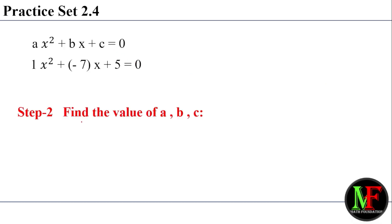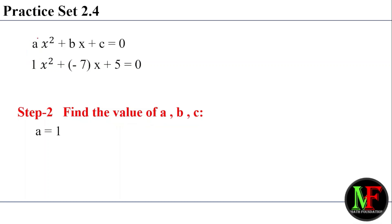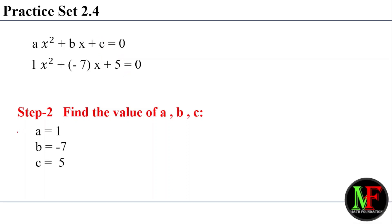Step number 2: find the value of a, b, and c. So a is equal to 1. And b value: b is equal to minus 7. And last, c is equal to pi. We have a value, b value, and c value. This is our question number 1 solved.